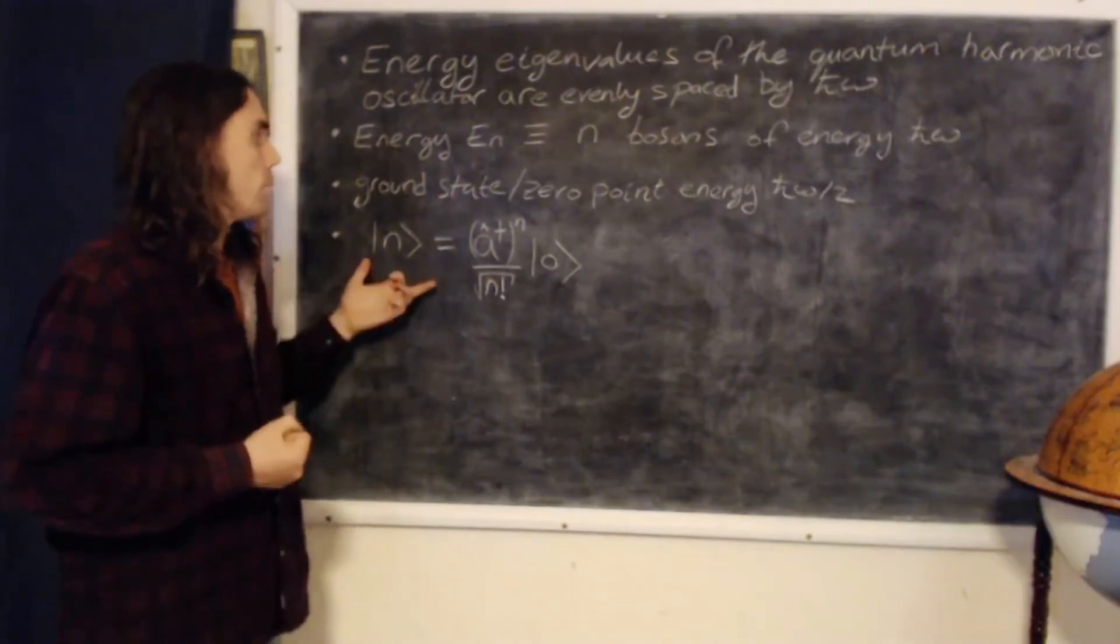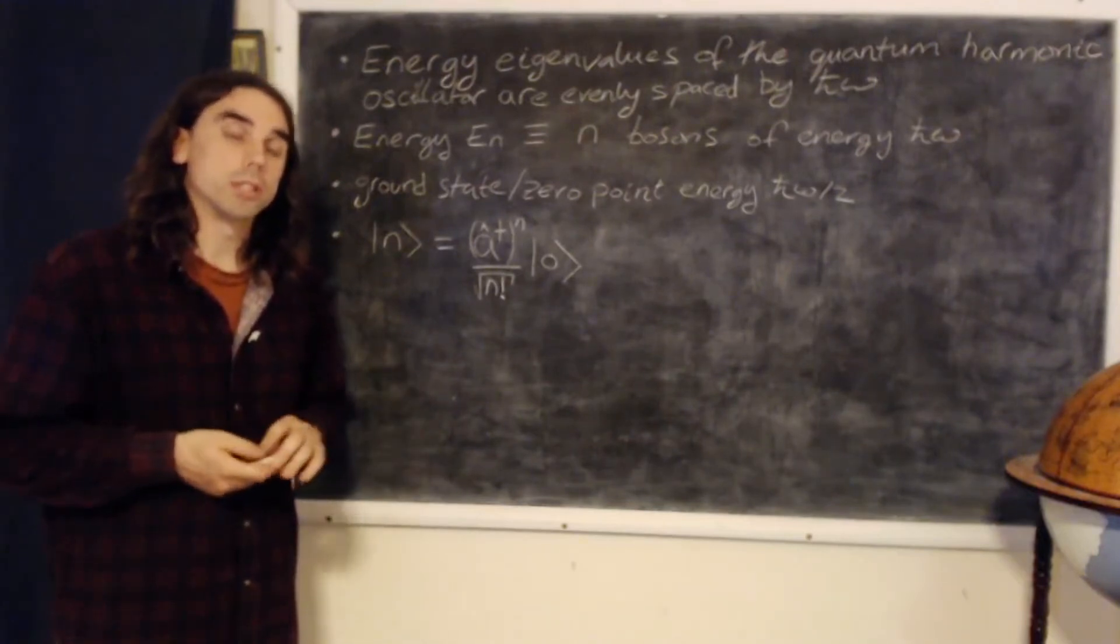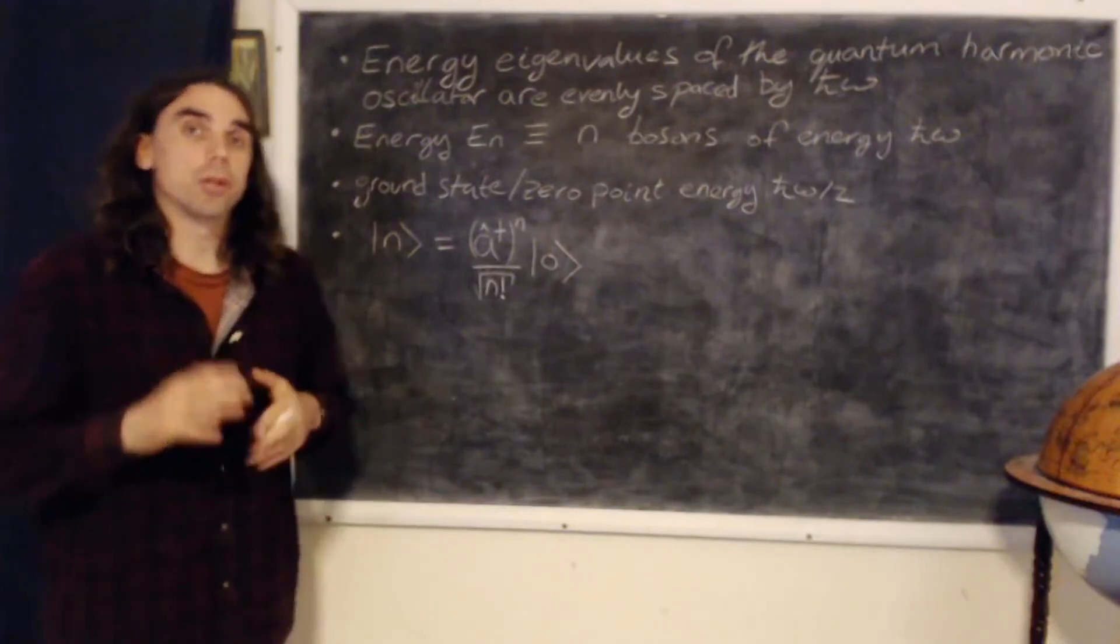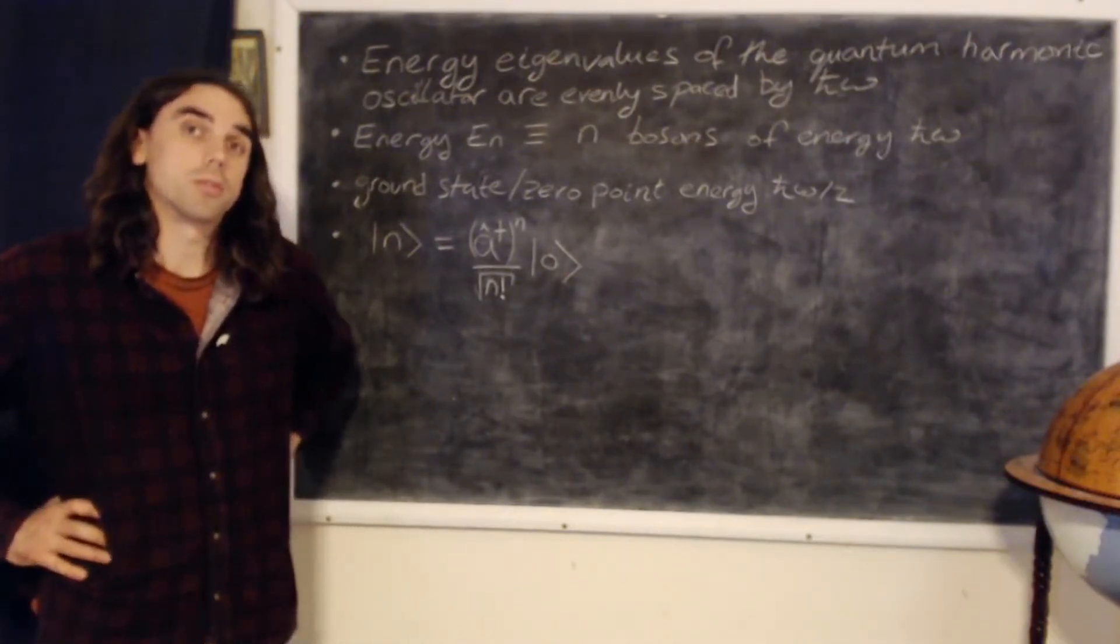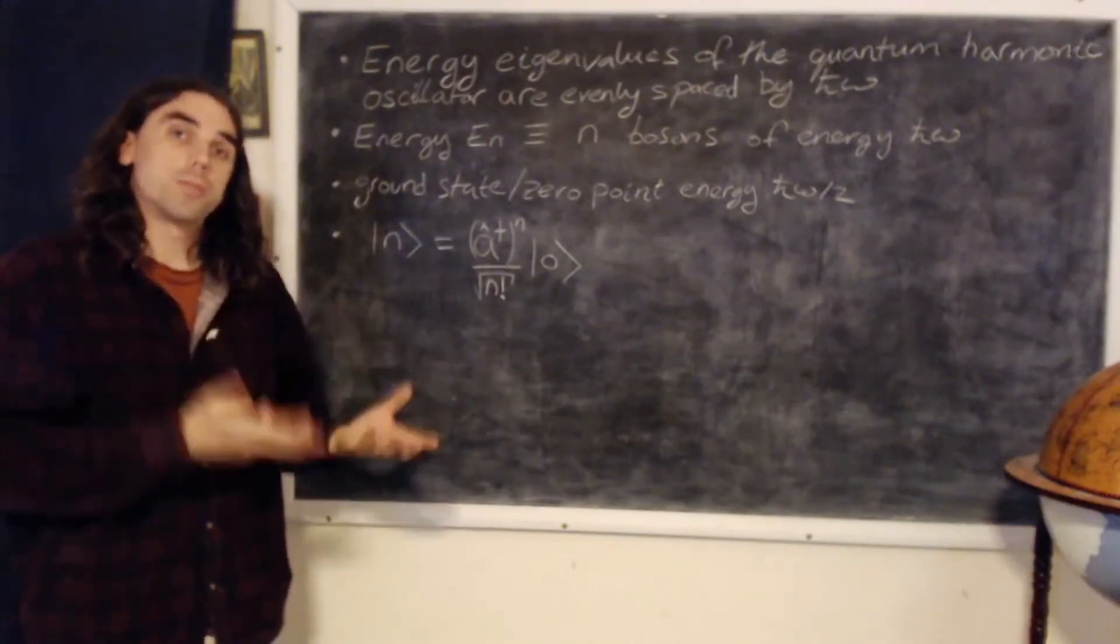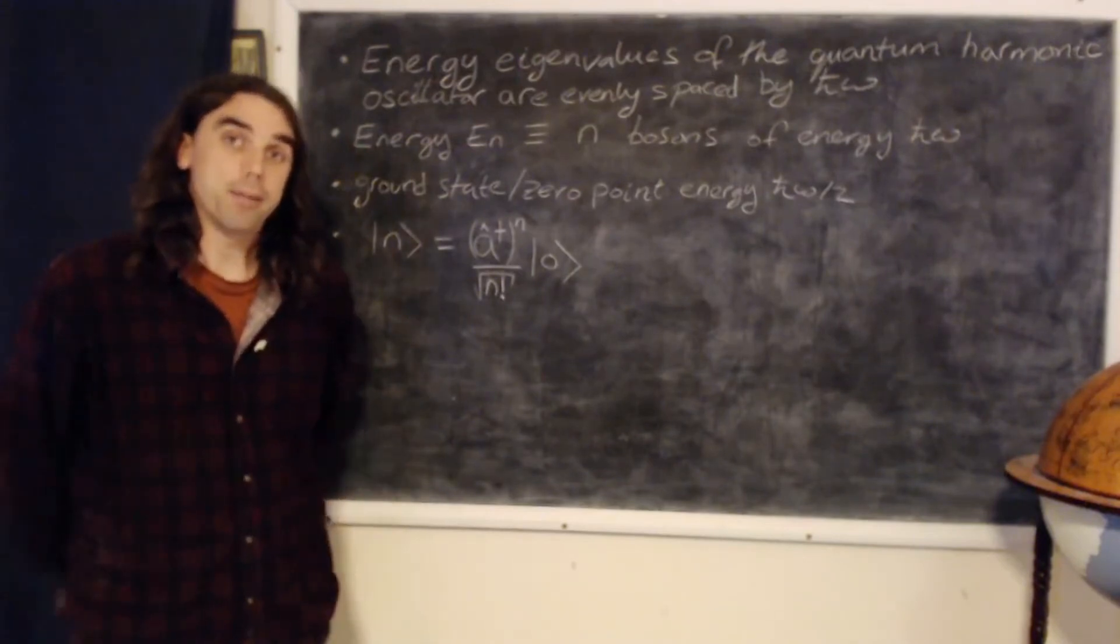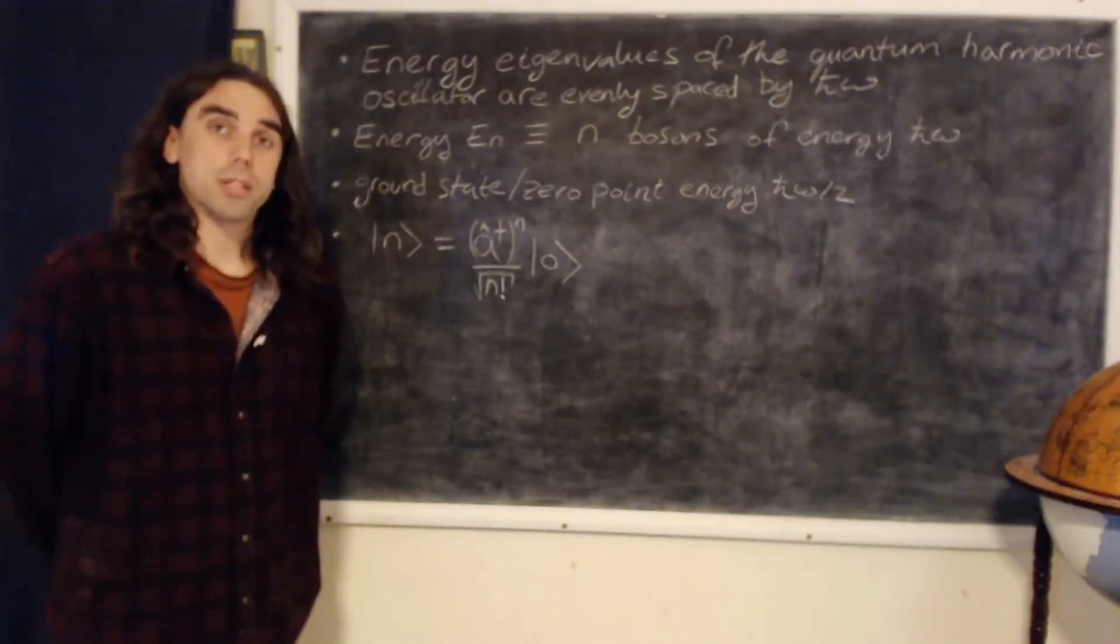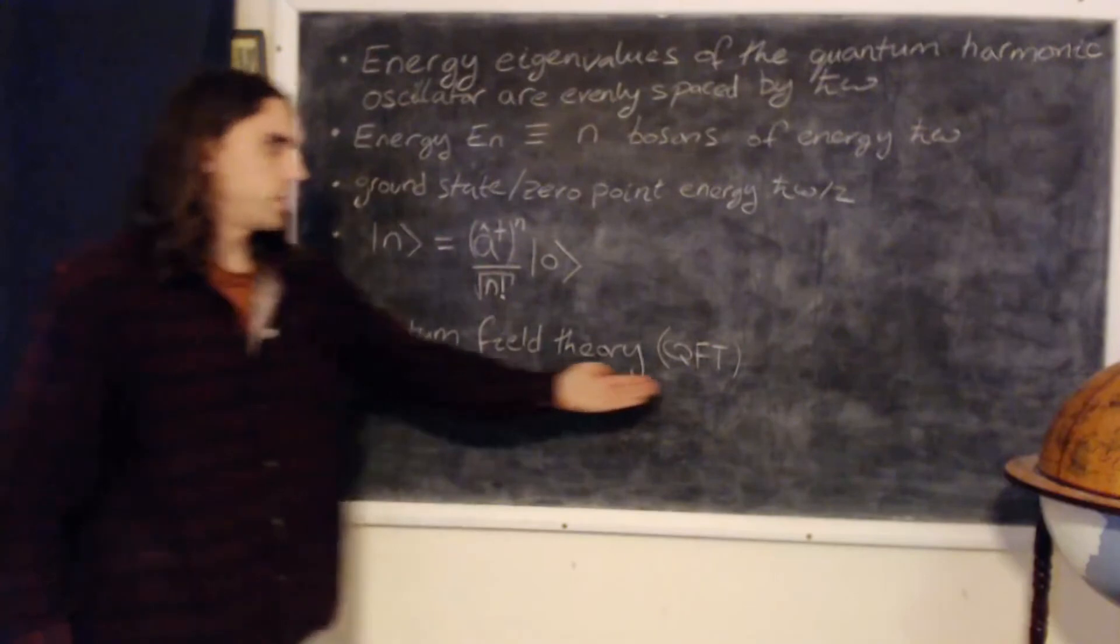So this last point is central to why the raising and lowering operators are so important. They actually give us the generalization to something we're not going to study in this course, which is when we include relativistic effects into quantum mechanics. So it turns out that in order to include special relativity and quantum mechanics together, you have to allow the number of particles to vary. It's impossible to keep it fixed. And in order to do that, we develop what's called quantum field theory, or QFT for short.